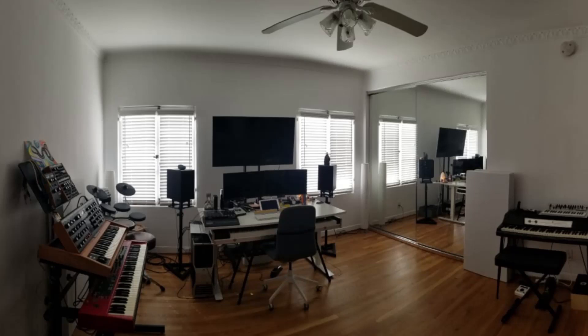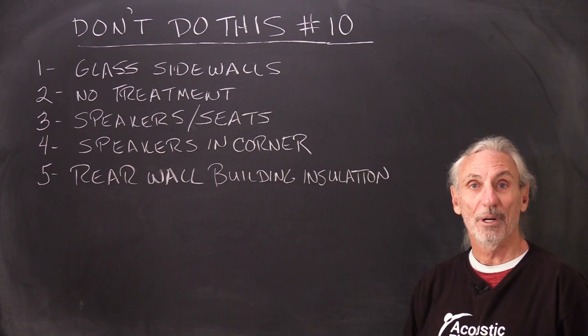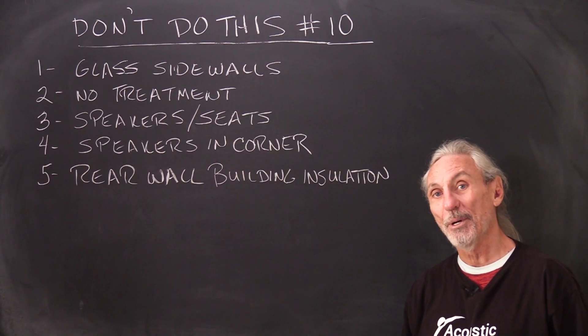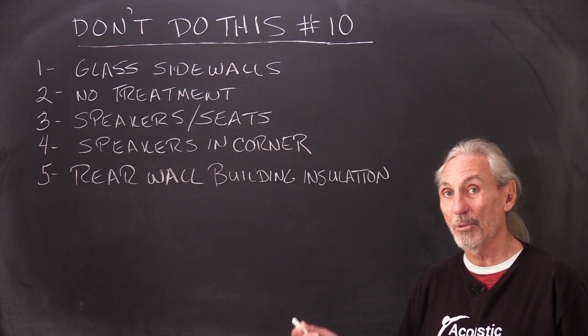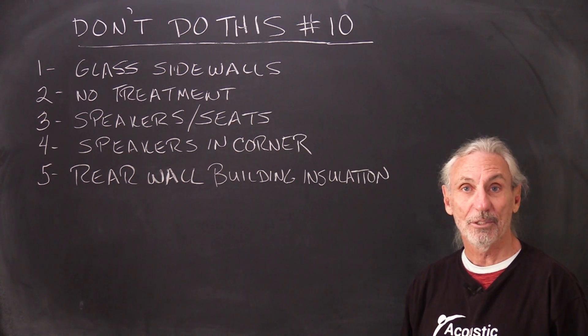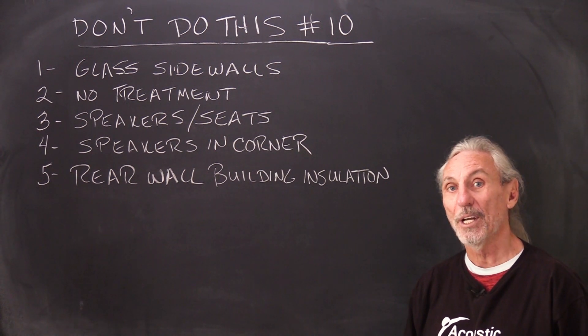In this first picture you can see that we've got glass sidewalls — just what we want in a very critical position. This room needs to be set up differently. This is an engineer who's mixing, playing, and arranging. Notice on the floors there's hardwood, so we need to get some throw rugs and area rugs underneath to minimize the reflections off the floor. Four walls, floor, and ceiling — all of these surface areas contribute their percentage to the problem.